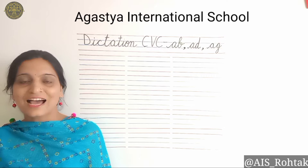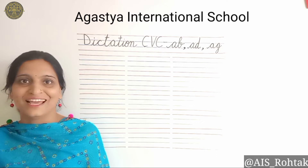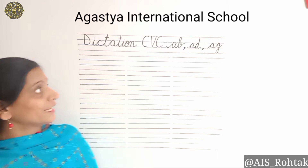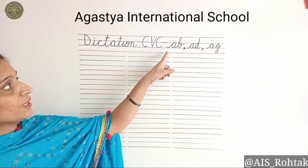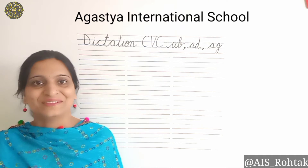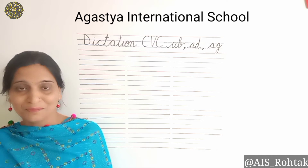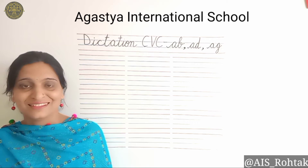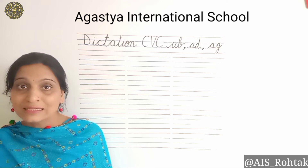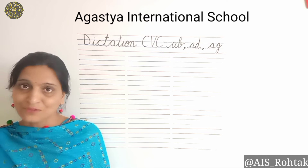Good morning Agassians, how are you all? I wish you all are fit and fine at your place. Today we are going to do the dictation of CVC word families: ab, ad, and ag. For this we need a notebook, pencil and eraser. While you are writing the dictation, you have to listen to the word or sound of each letter carefully.